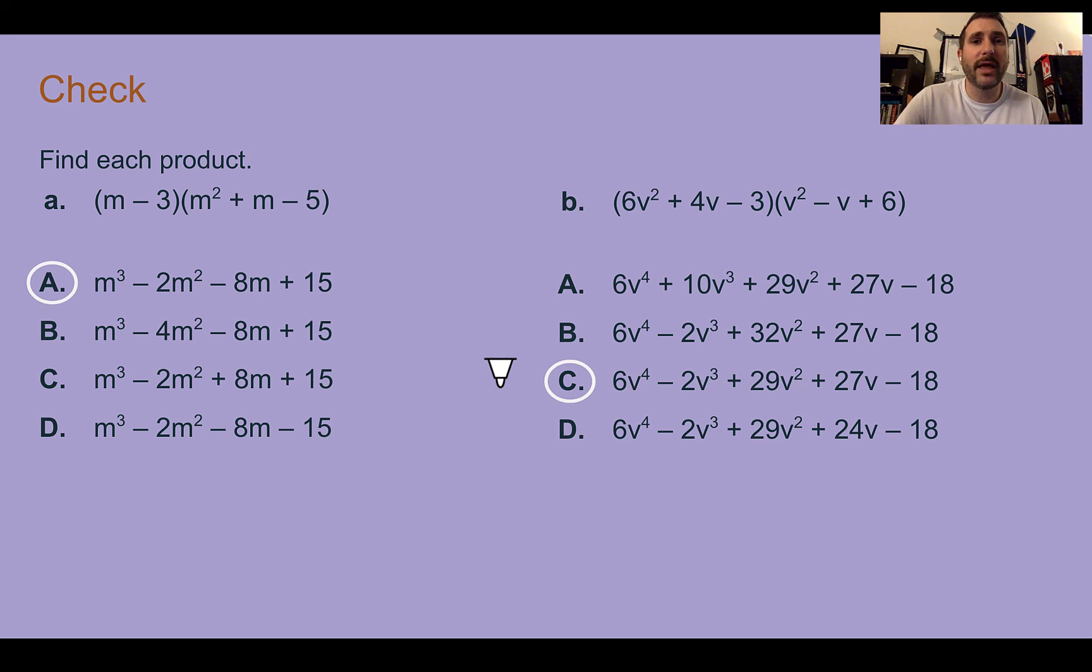Check your answer. So, for A, you should have got A, and for problem B, you should have picked C. For both of these, just based on the fact that I have a trinomial in each, this one has two of them, I would use the box method. So, setting up this first one, we would have 2 tall by 3 wide, m minus 3, m squared, m, so plus m, minus 5. Going through, I have m to the 3rd power, which all of those have. The end, I would have plus 15.